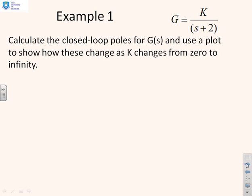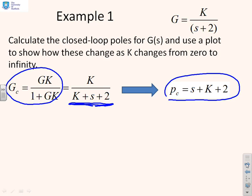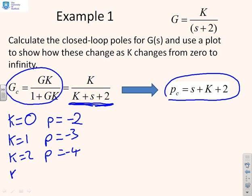Let's look at an example then. Calculate the closed loop poles for G of s and use a plot to show how these change as K changes from 0 to infinity. I've done the closed loop transfer function here so you can see, and essentially it's going to come out like this: K over K plus s plus 2. So the closed loop pole polynomial is Pc equals s plus K plus 2. What I can do now is substitute in some different values of K. If K equals 0 then I get a pole at minus 2. If K equals 1 I get a pole at minus 3. K equals 2 I get a pole at minus 4. K equals 3 I get a pole at minus 5 and so on.